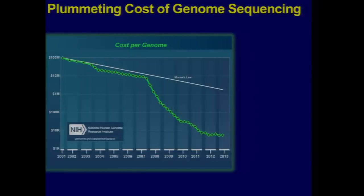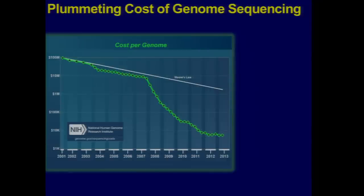When we sequenced that first human genome as part of the Human Genome Project, it cost about a billion dollars. It was a brilliant investment because it was foundational information for humankind that we will forever use. But it was by no means a medical test. Today it's just a few thousand dollars. Within the next year or so we think we will have crossed the threshold of $1,000 — what we refer to as the $1,000 genome — and that curve has been coming down and is now approaching that threshold.